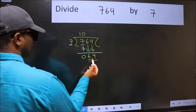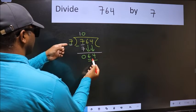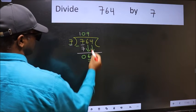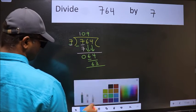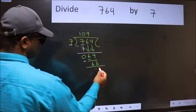Now, 64. A number close to 64 in the 7 table is 7 times 9 is 63. Now we should subtract. We get 1.